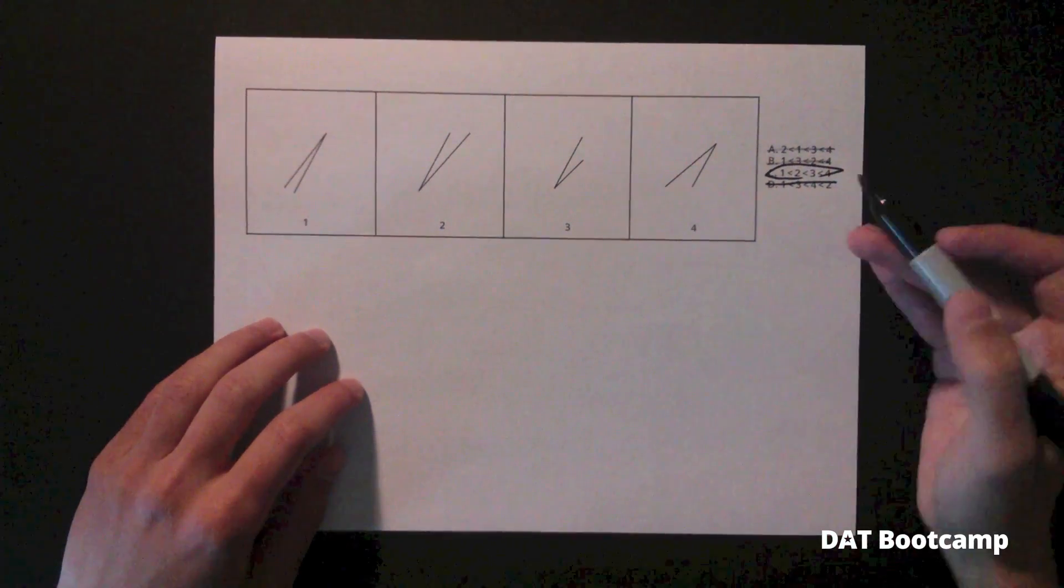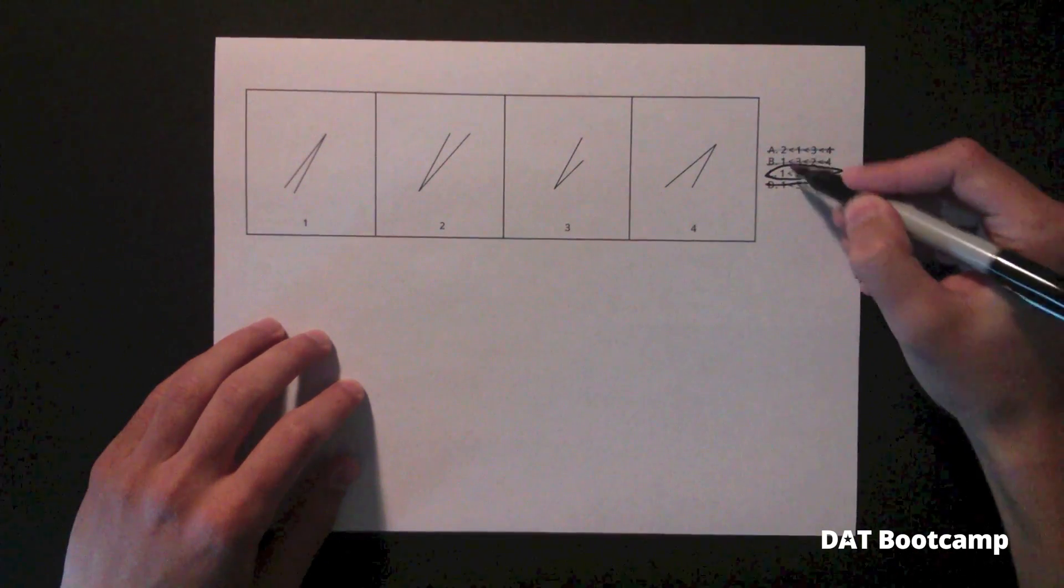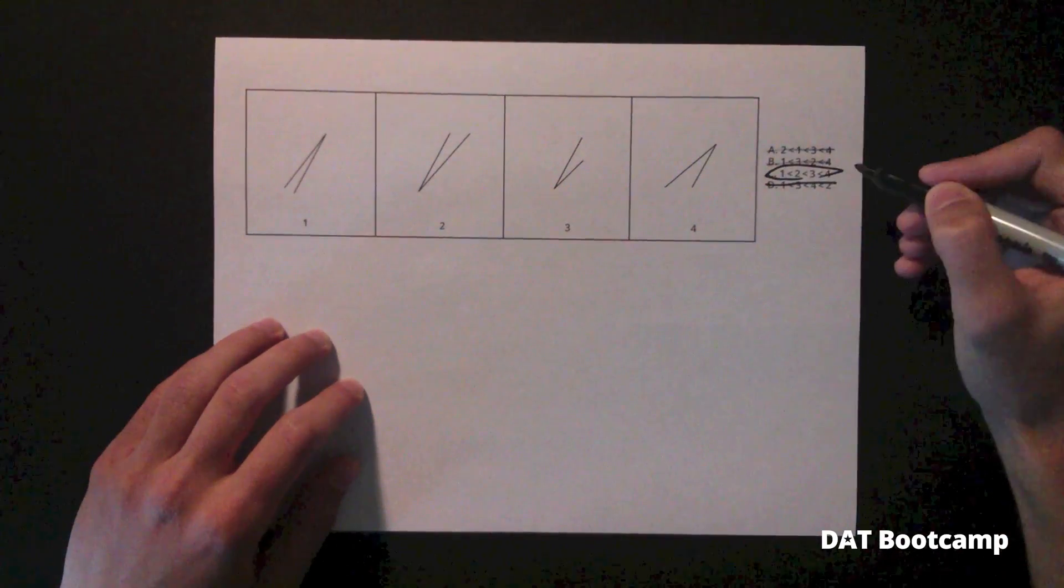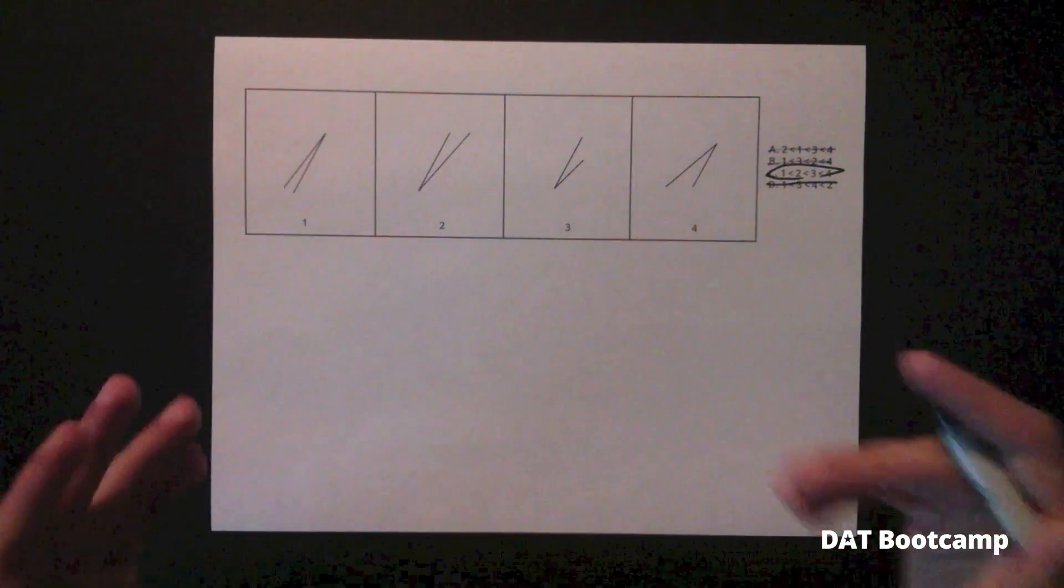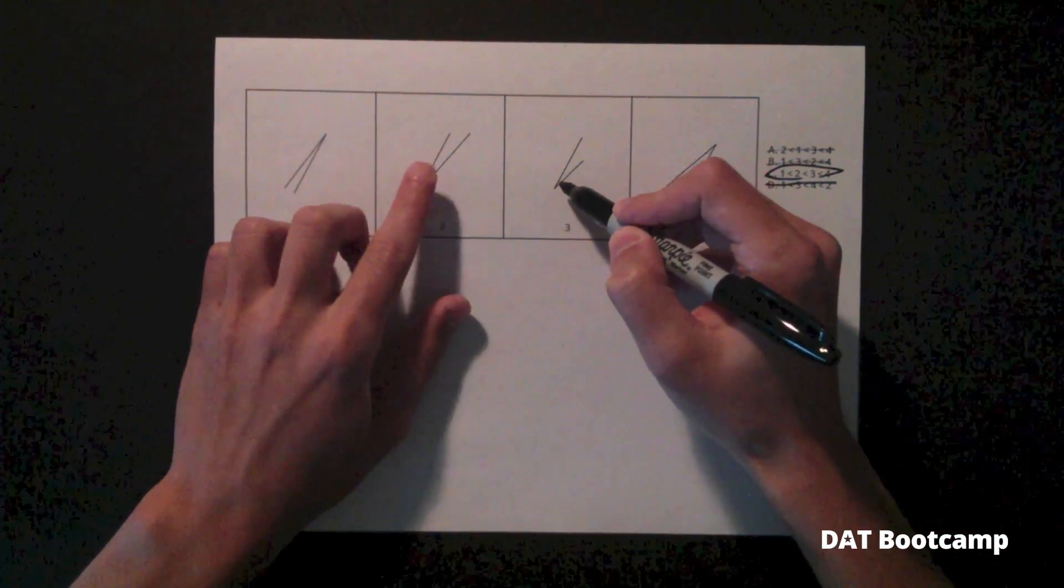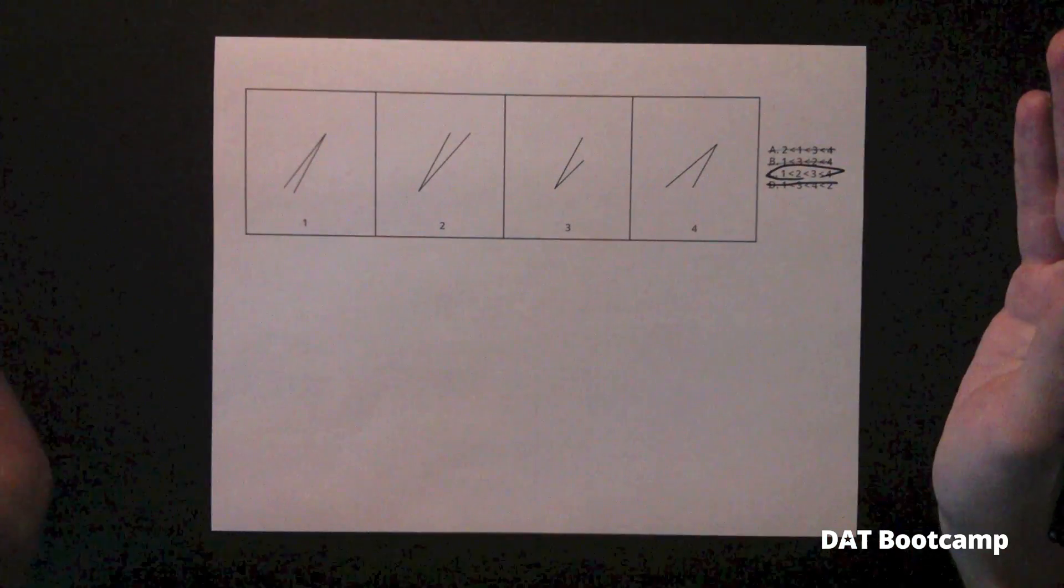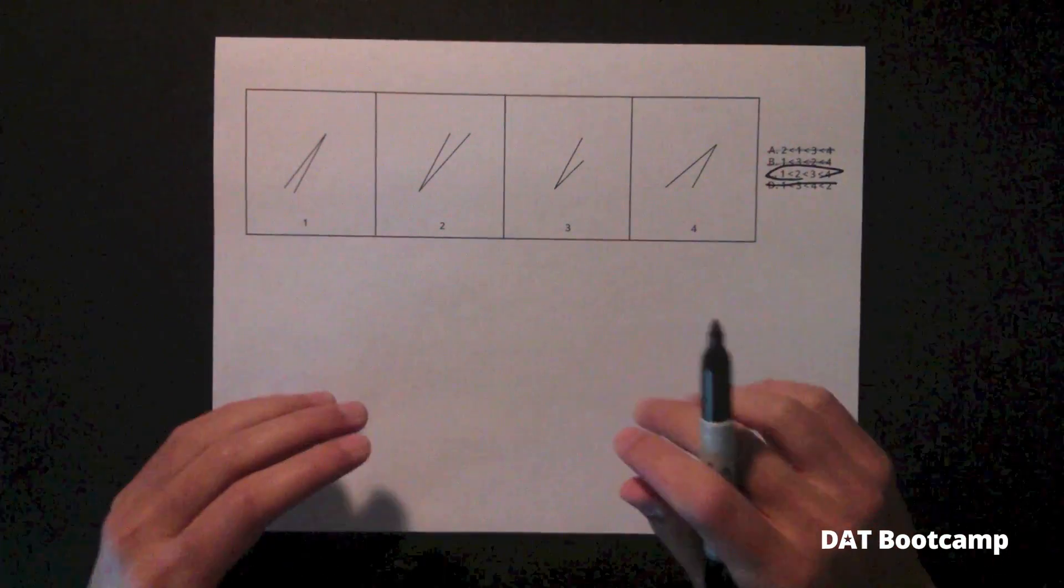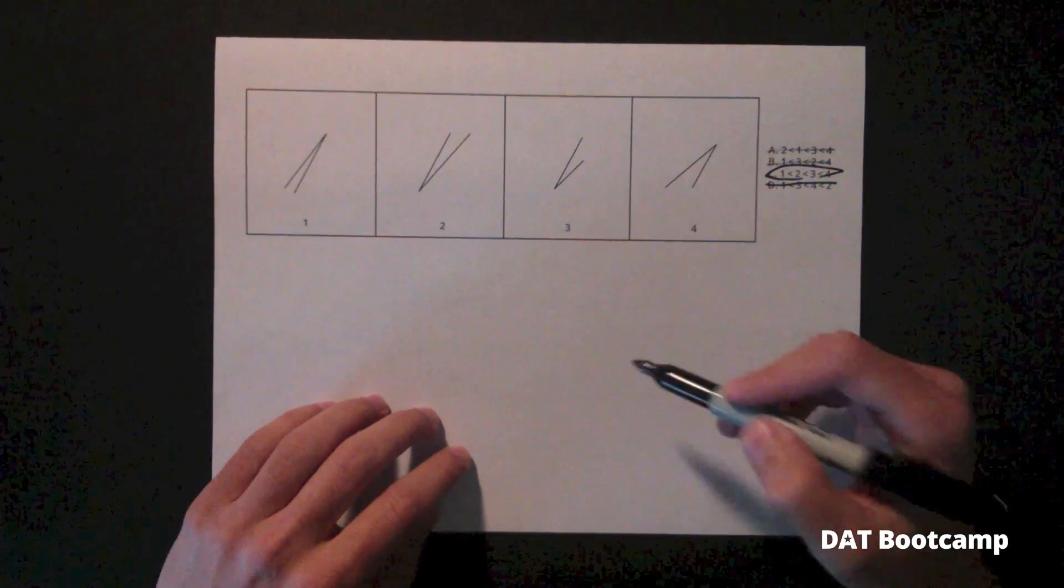So to review, to beat the angle ranking section on the DAT, you always want to start by going to the answer choices. Either the largest angle or the smallest angle. Then you want to compare these two angles and begin eliminating answer choices. If you get stuck because two angles seem too close together, use the technique of the quick glance method where you quickly glance between the two angles at their vertices and then you go on your gut feeling about which one is bigger and which one is smaller. You shouldn't spend more than five minutes on this section because you're more likely to get other questions right if you spend more time on them. You should be averaging about 20 seconds on each of these questions.